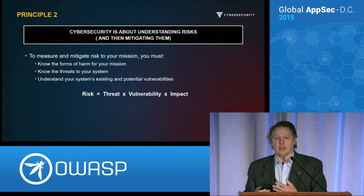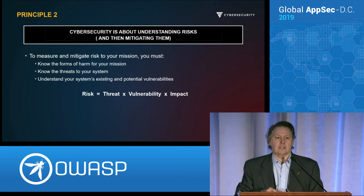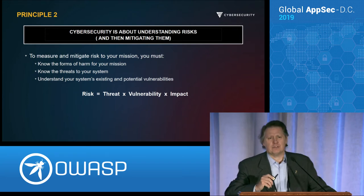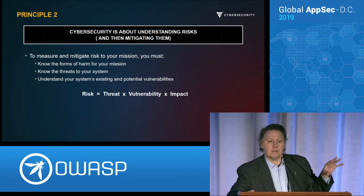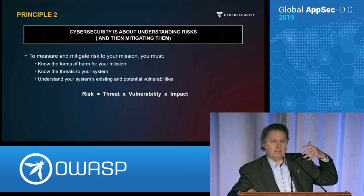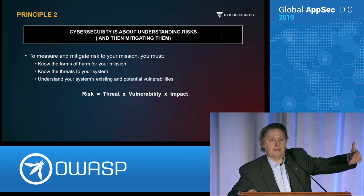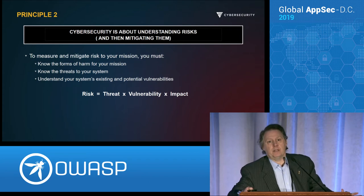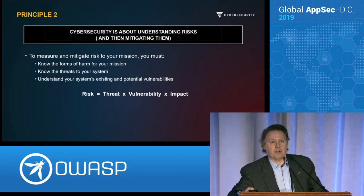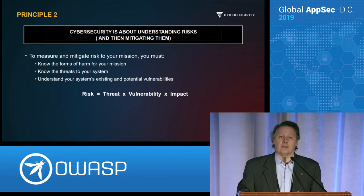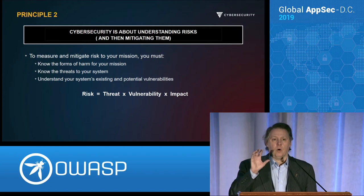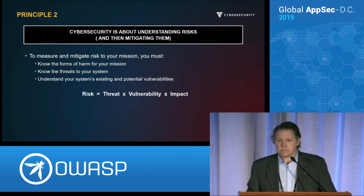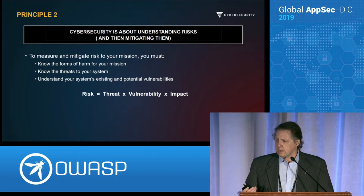We had to understand what risks those other information holders thought were important to their data, then build the right security controls so we could clearly explain: if you share your data to us, we're going to protect it — it's classified, only people with a certain mission type can see it, and we can only hold it for two weeks. Once we could clearly explain that to the other information owners, they were willing to put their information in our system, and it saved a lot of lives. Security ends up being about tradeoffs — you can't always provide all the security features you might want because you have a job to do.